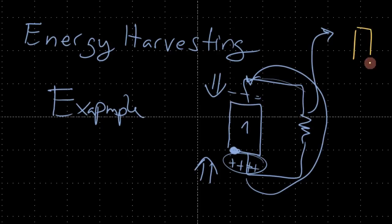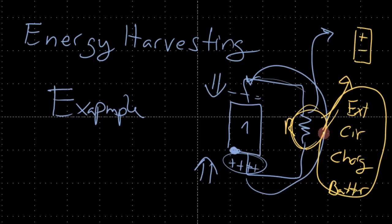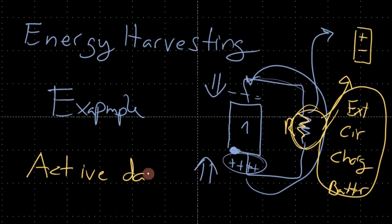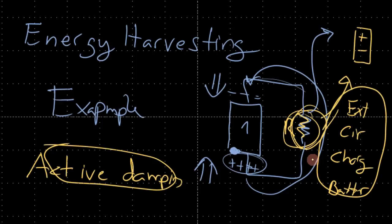This resistor represents an external circuit, which would actually be charging a battery. We'll assume that whatever energy is dissipated in this resistor is actually going to that external circuit to charge the battery. The external circuit will have a frequency dependence we'll design for later, but for now we'll just assume it's a resistor. This is the active damping case, where we're designing the piezoelectric system to dissipate energy, and we're using that active damping model as a means of understanding energy harvesting.